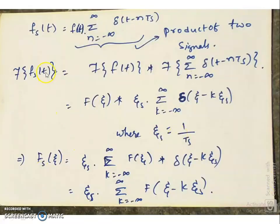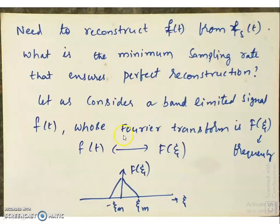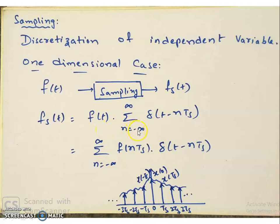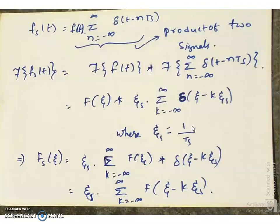Let us compute the spectrum of Fs of t. The spectrum of Fs of t can be obtained by taking the Fourier transform. The Fourier transform of Fs of t equals the Fourier transform of F of t multiplied with the summation over n from minus infinity to infinity of delta of t minus n·ts. The Fourier transform of a product of two signals is the convolution of their spectra. The Fourier transform of F of t is F of ζ, and the Fourier transform of the impulse train is another impulse train — you have learned this in the DSP course, so you can take this as an assignment.